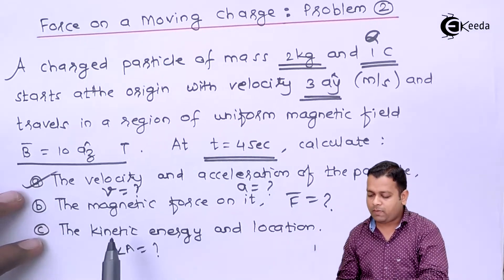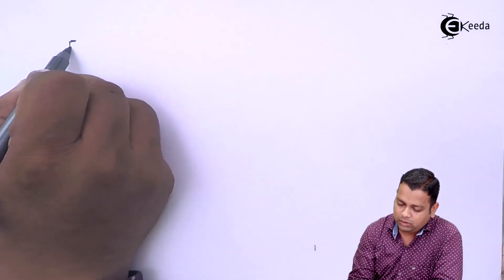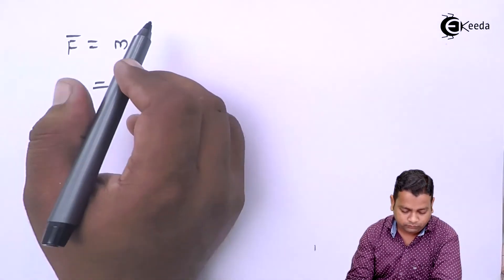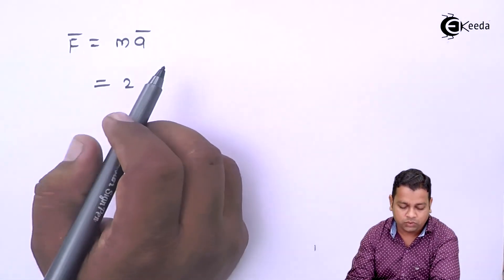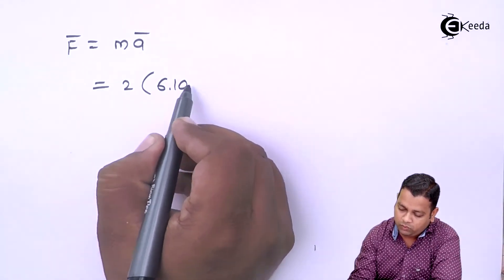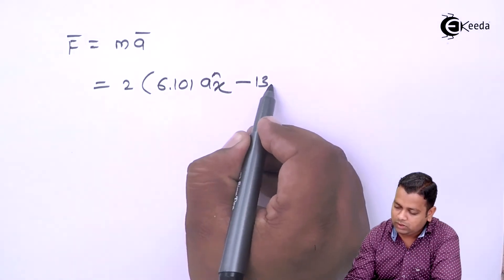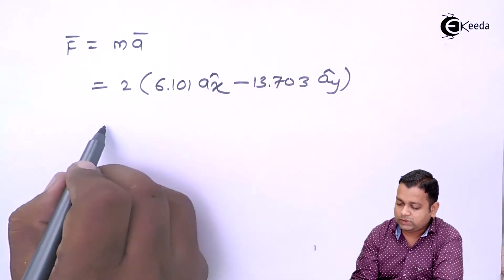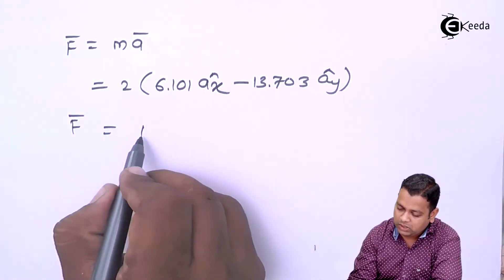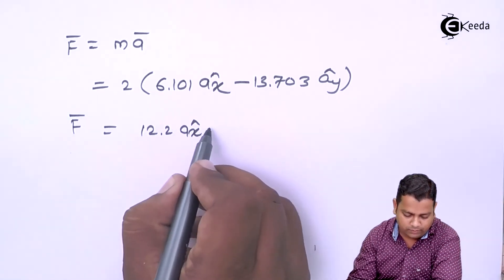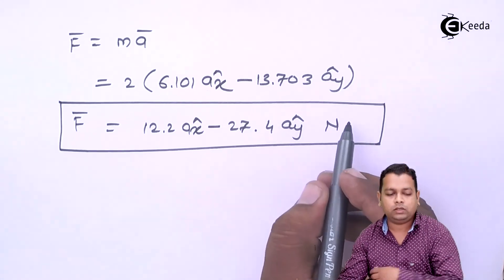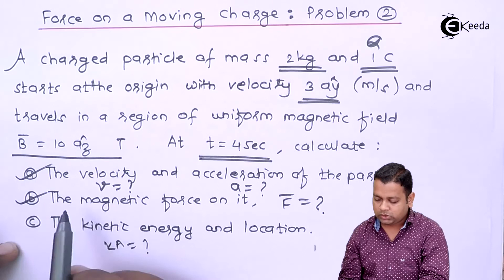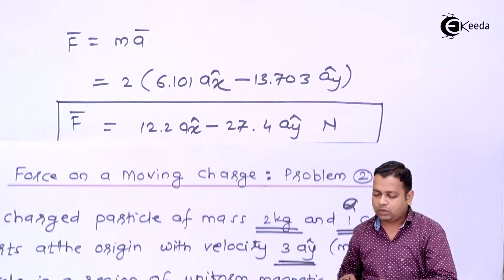Part B requires the magnetic force onto the charge. Using F bar = M·A bar, with mass = 2 kg and acceleration = 6.101 Ax cap − 13.703 Ay cap, we get F bar = 2 × (6.101 Ax cap − 13.703 Ay cap) = 12.2 Ax cap − 27.4 Ay cap Newtons. This is the magnetic force for part B.